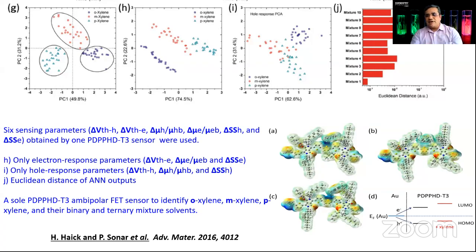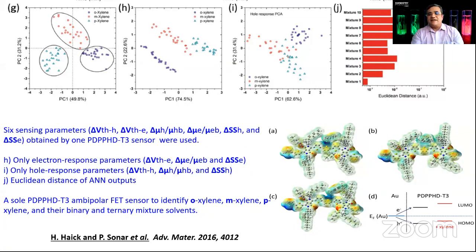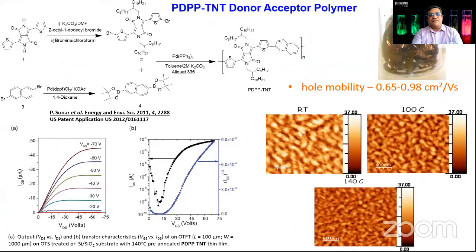We did theoretical modeling to understand what happens when xylene contacts the DPP polymer backbone. The energy level changes — the HOMO value moves up, which means holes are getting more injected. We could see the change in hole mobility, confirming the sensing mechanism.